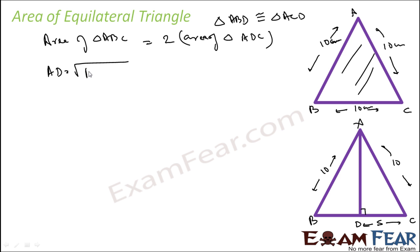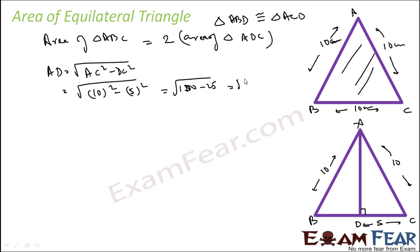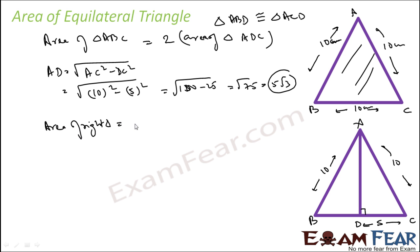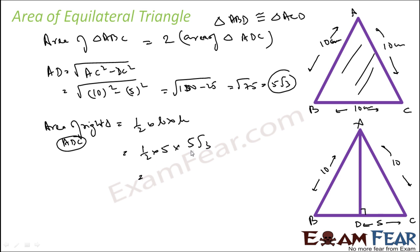AD is root of AC squared minus DC squared — by the Pythagoras theorem. Putting the values: root of 10 squared minus 5 squared, that is root of 100 minus 25, which is root of 75, that is 5√3. So we got AD as 5√3. Now we can apply the formula for the area of a right triangle: 1/2 into base into height. The base is 5 and height is AD, that is 5√3. So this comes out to be 5/2 into 5√3.